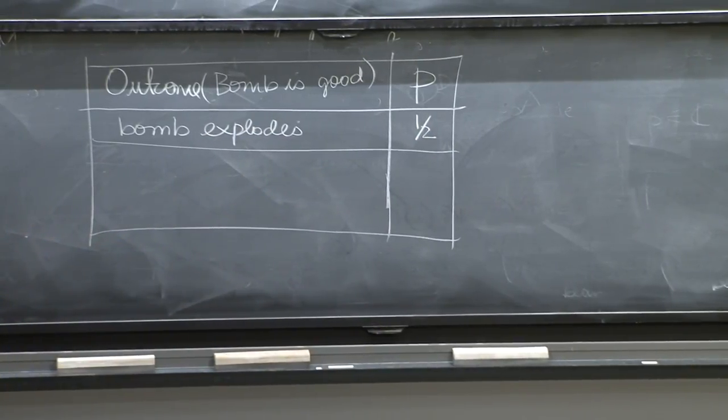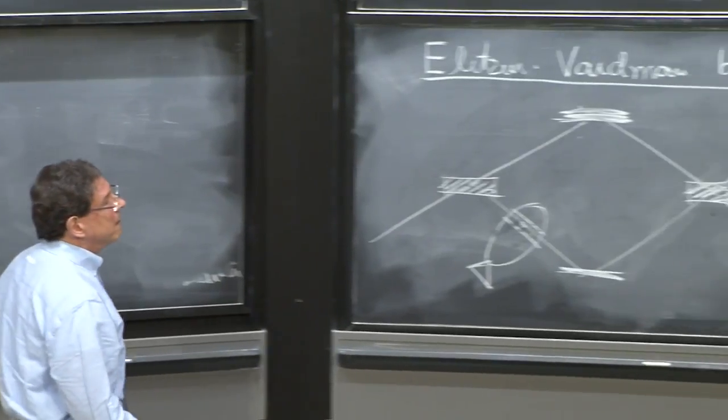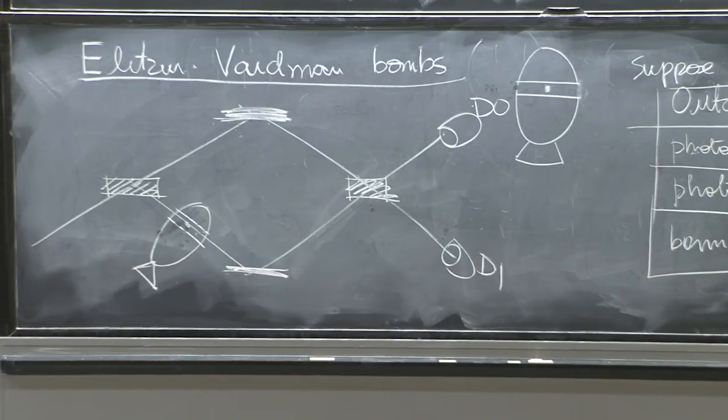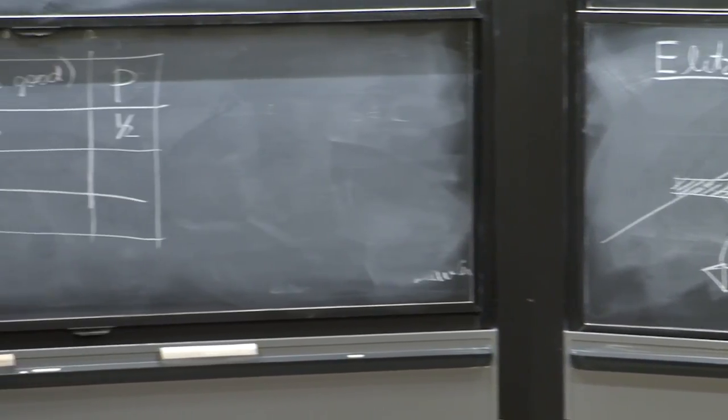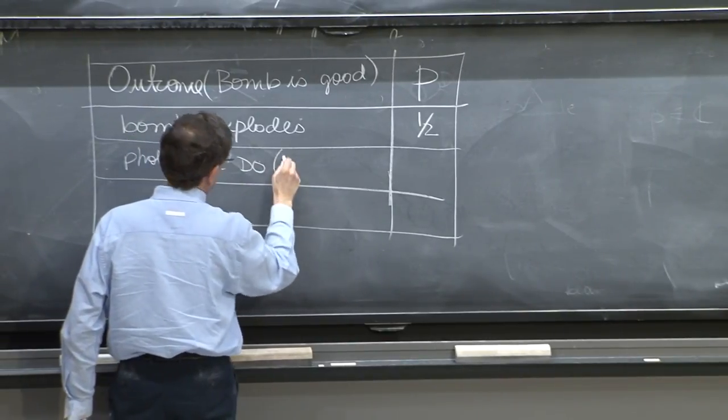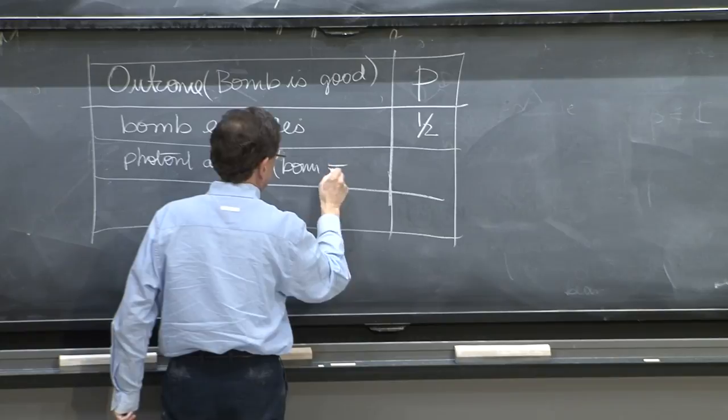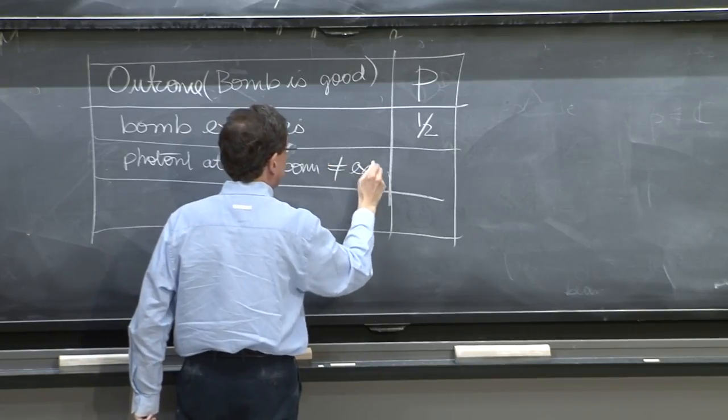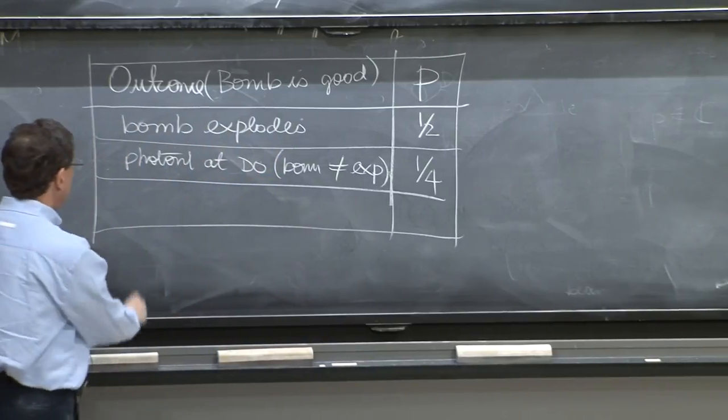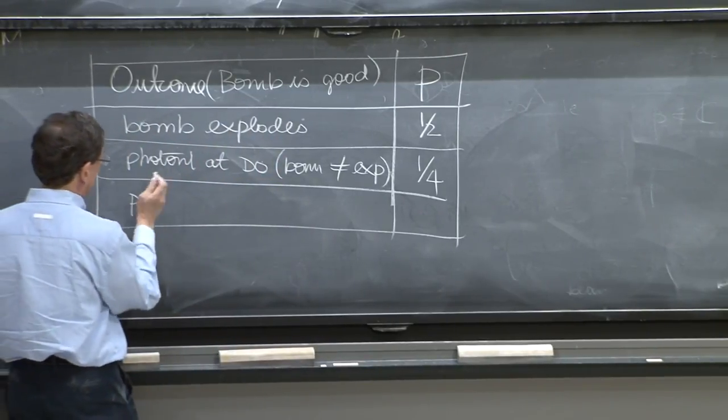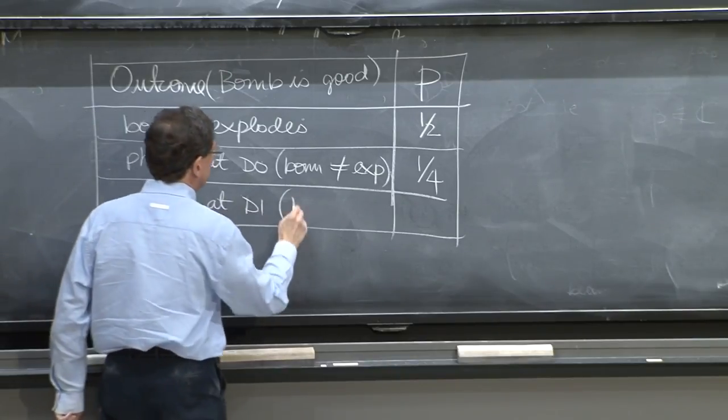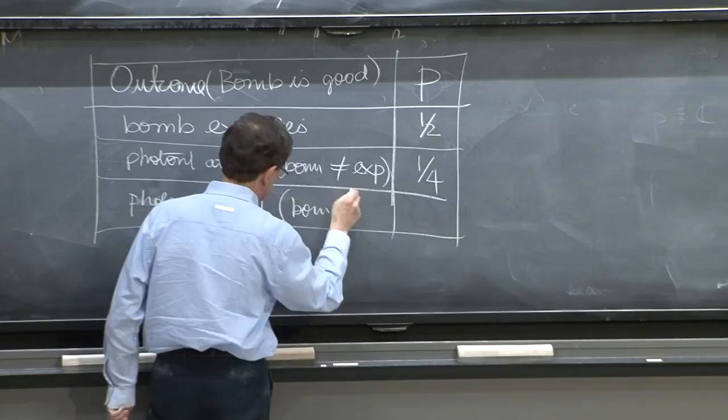On the other hand, in this situation, it is possible that the photon at D0 and bomb doesn't explode. And there's a probability one-quarter. And there's a probability one-quarter that the photon is at D1, and the bomb does not explode.